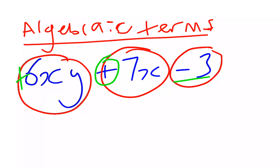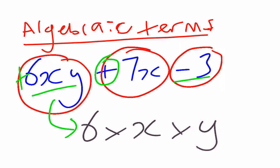The algebraic term 6xy, as you know, means 6 times x times y. Those times signs join that term together. We don't use multiplication signs in algebra, so if I've got 6 times x times y, I simply write that as 6xy.